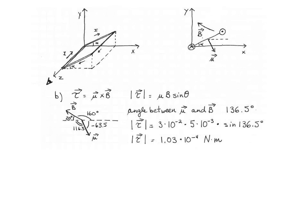The magnitude of the torque is 3 times 10 to the negative 2 ampere·meters squared multiplied by 5 times 10 to the negative 3 tesla multiplied by sine of 136.5 degrees, giving 1.03 times 10 to the negative 4 newton·meters. To find the direction, I place my hand along mu, rotate so my palm faces B, bend my fingers toward B — my thumb points into the page, so the negative z-direction. The torque vector is in the negative k direction and the loop rotates clockwise.